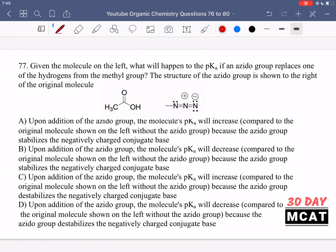In question 77, it says given the molecule on the left, what will happen to the pKa if an azido group replaces one of the hydrogens from the methyl group? The structure of the azido group is shown to the right of the original molecule. So look at the molecule on the left, which is this carboxylic acid, and we want to know what happens to the pKa if this azido group is added.